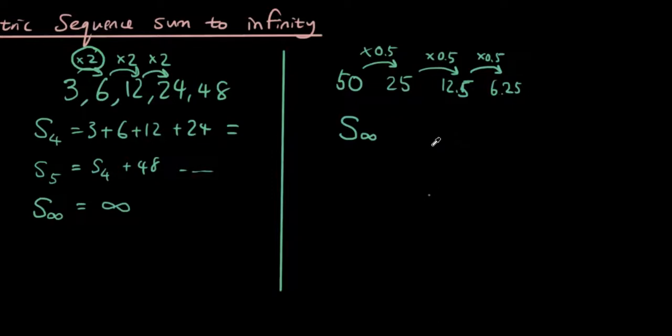So let's bring back the formula for just the ordinary geometric series formula. And that was Sn is equal to a bracket r to the power of n minus 1 over r minus 1. That was the formula we devised a few lessons ago.